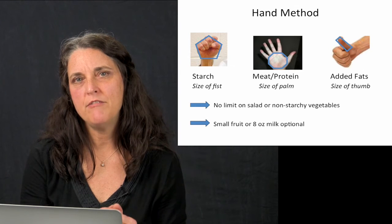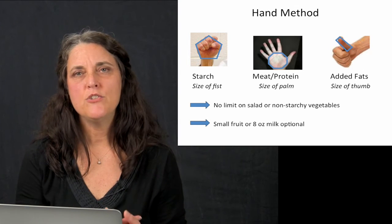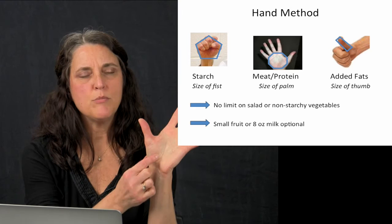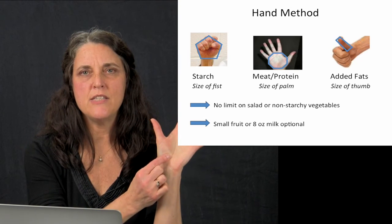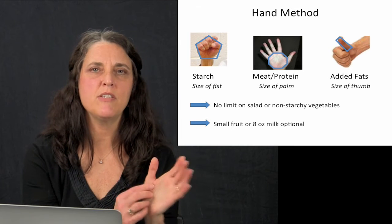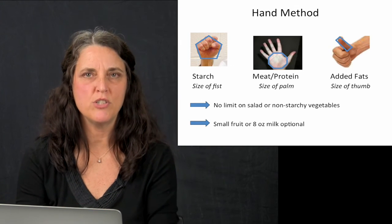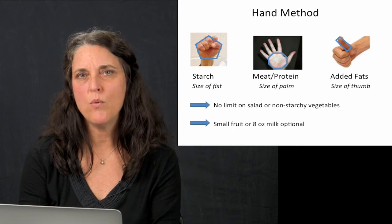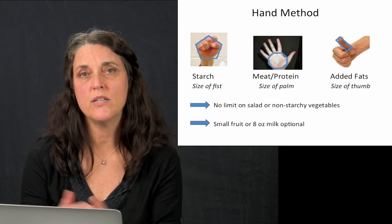In terms of added fats, whether that's salad dressing or sour cream or butter, having some sort of a limit such as the size of your own thumb instead of half a stick of butter in a baked potato, just having some visual guidance on what the portion size might be can go a long ways in controlling caloric intake as well.